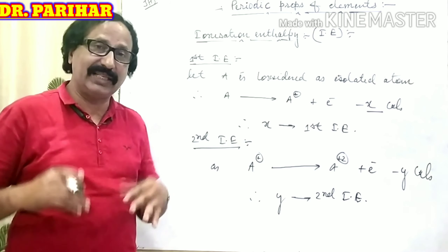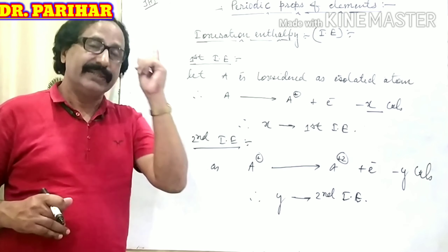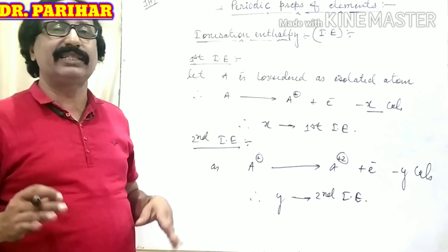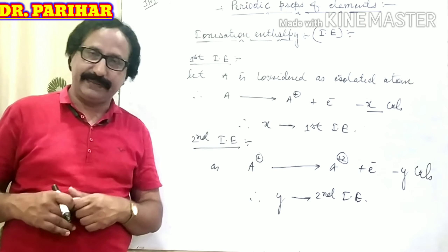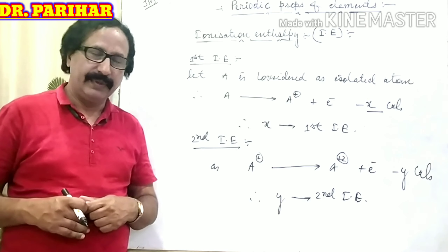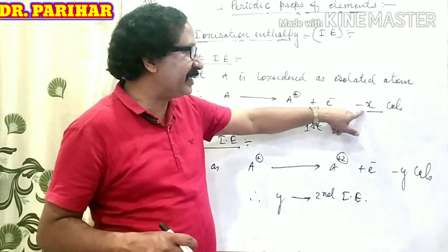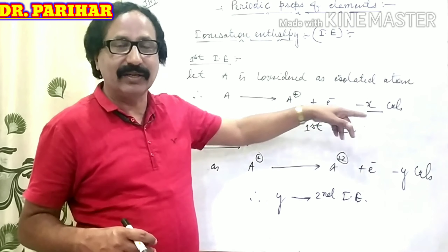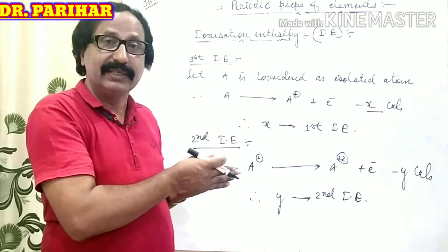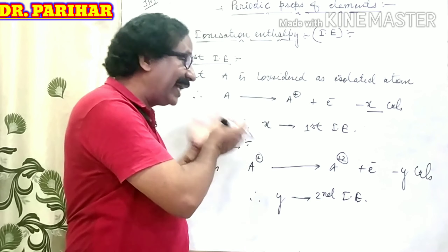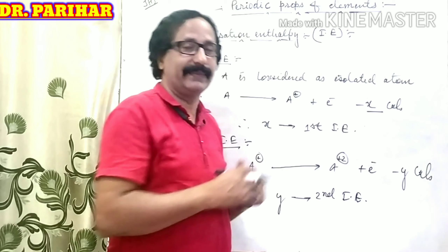By the same way we can also determine third ionization enthalpy, and so on — first ionization enthalpy, second ionization enthalpy, third ionization enthalpy. The negative sign is used because energy is supplied in each case.